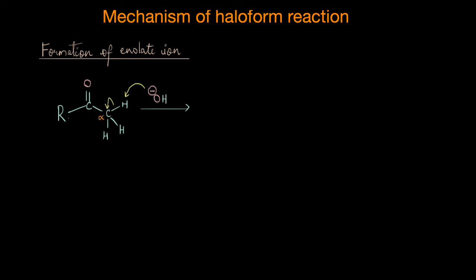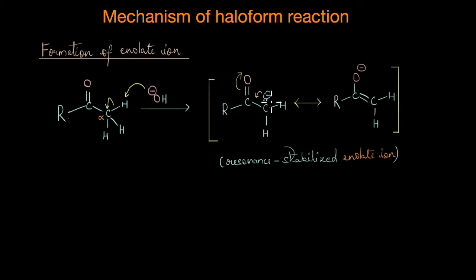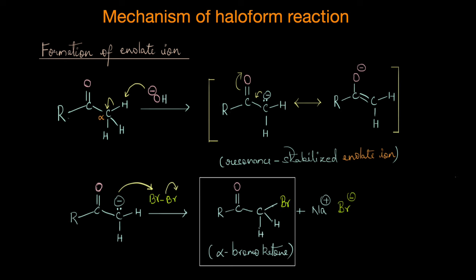A major driving force for this reaction is the stability of the product. The enolate ion formed is highly resonance stabilized, which drives the reaction forward. This enolate ion is also nucleophilic — the carbon atom bears a negative charge and, unlike electronegative oxygen, is eager to get rid of it, making the enolate a very good nucleophile. In the reaction mixture we also have halogens, which are electrophilic. So the nucleophilic enolate ion attacks the halogen atom, giving us an alpha-halo ketone.